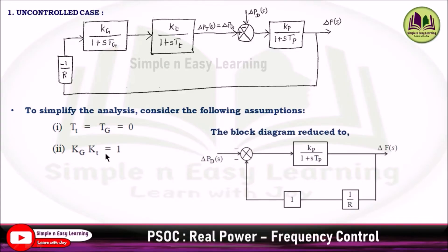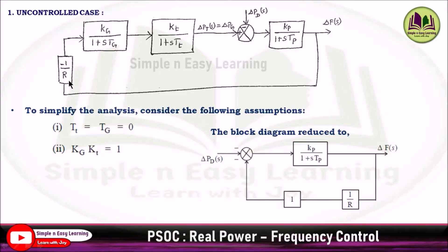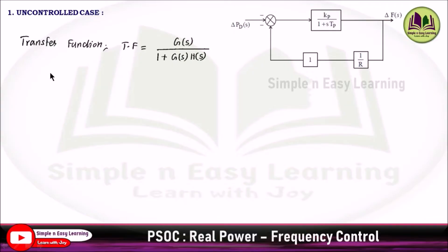The block diagram is further reduced to KP divided by 1 plus STP. Bringing del PD to the left-hand side, del PD hits at negative. The feedback loop 1/R into the block becomes 1 since KG times KT is 1 and TG equals 0, so the block is simply represented as 1 and this feedback path hits at negative. Since here we have minus 1/R, we proceed to find the transfer function.